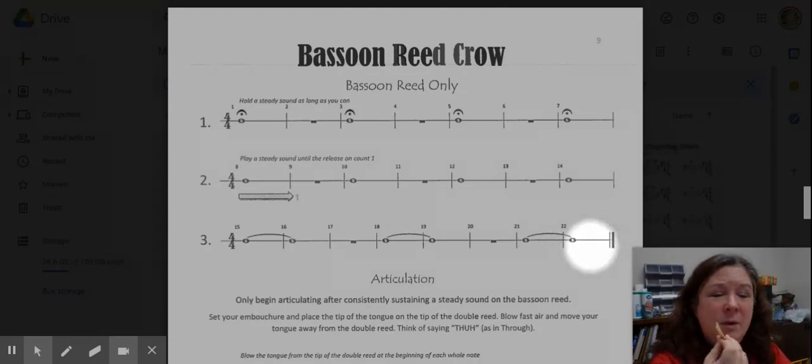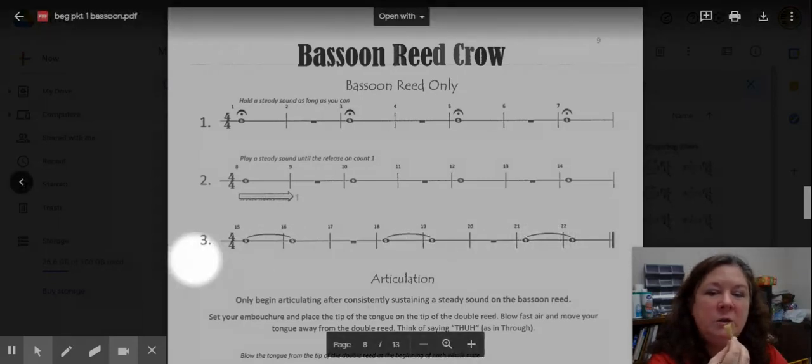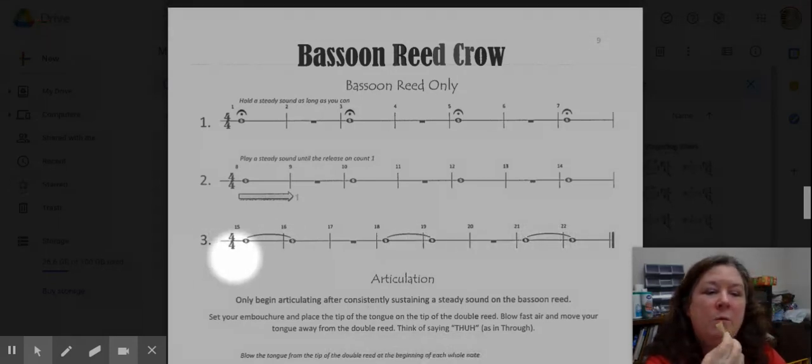So as you can see, this is not something that comes naturally. It is something that you're going to have to work on. So remember to go back and do the reed crow before you begin to play. Test yourself, first of all, with the longest one that you can do with a four count crow, and then trying for eight counts with the metronome on.